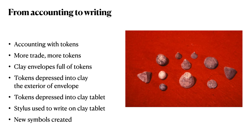This led to the problem that you couldn't tell what was inside the envelope without breaking it open. To solve this problem, tokens were depressed into the clay on the exterior of the envelope while the clay was still soft, leaving impressions that could then be read.